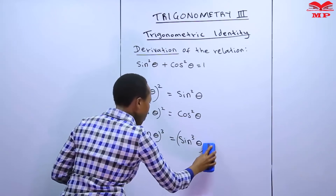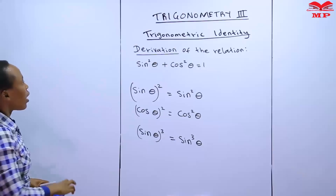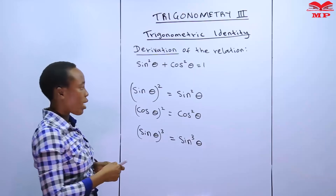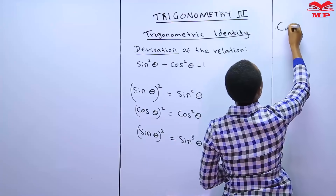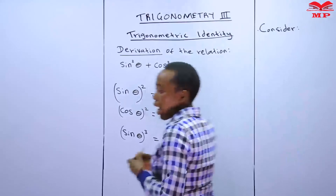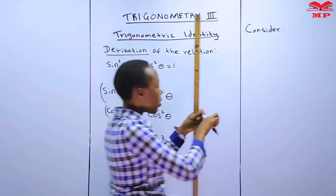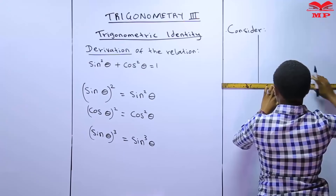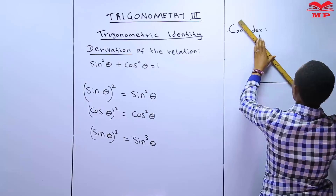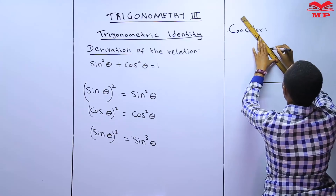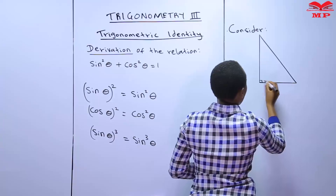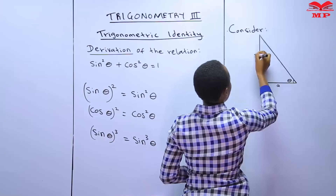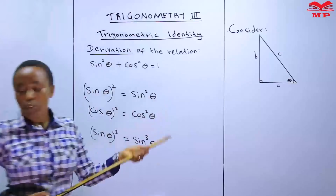So I want us to now be in a position to derive our trigonometric identity: sin squared theta plus cos squared theta is equal to 1. I want us to consider a right-angled triangle so that we can be in a position to derive that trigonometric identity. We consider this triangle — it is a right-angled triangle.